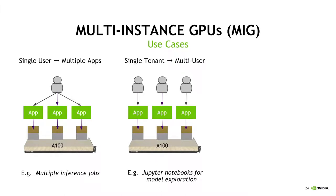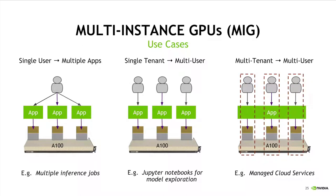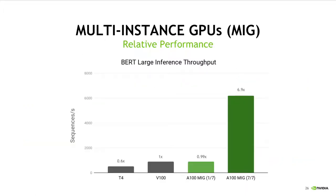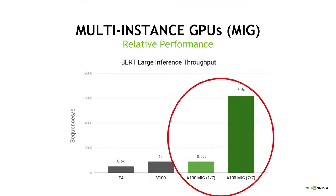Or it might be several trusted users from the same organization, each running model exploration in a Jupyter notebook on their own dedicated GPU instance. And given the hardware isolation that multi-instance GPUs provide, you really can treat them as separate GPUs, allowing untrusted users to run on their own dedicated instances, as would be the case when running on a managed cloud service such as Google Cloud AI or Amazon SageMaker. In the case of running inference on the BERT natural language processing model, a single GPU instance constituting one-seventh of a full A100 GPU was able to perform on par with a full V100 GPU, and running seven of these in parallel gave roughly seven times the overall throughput.